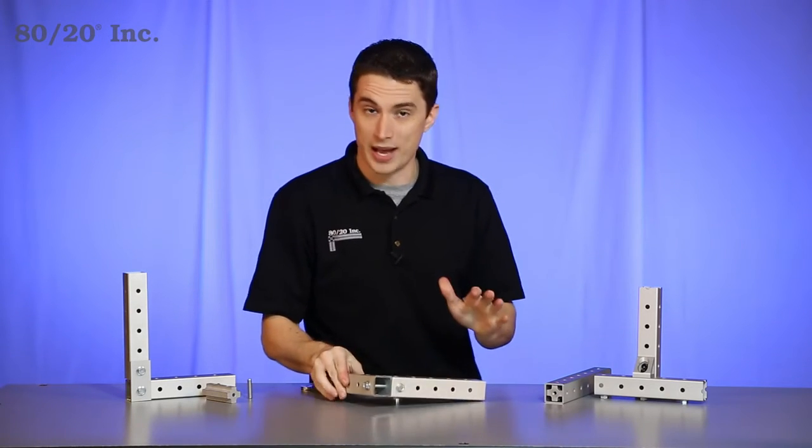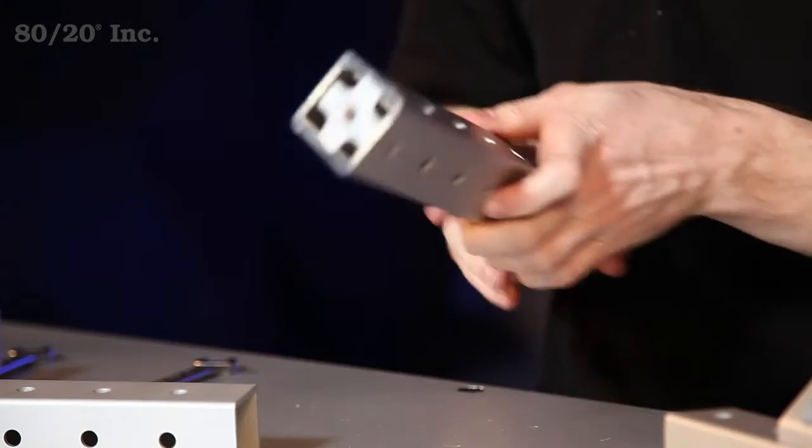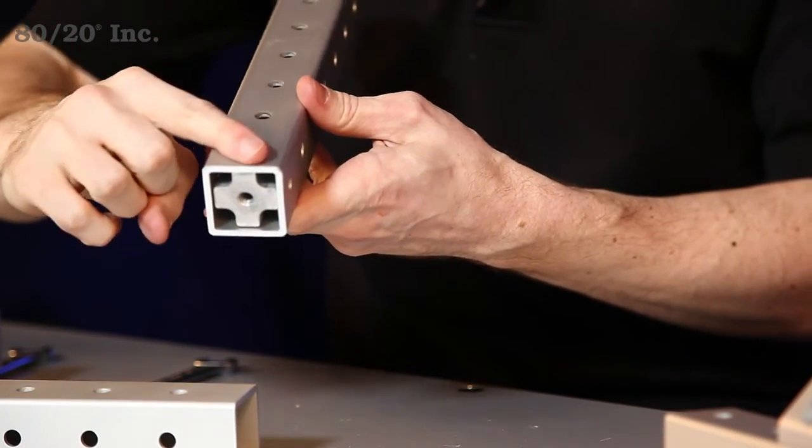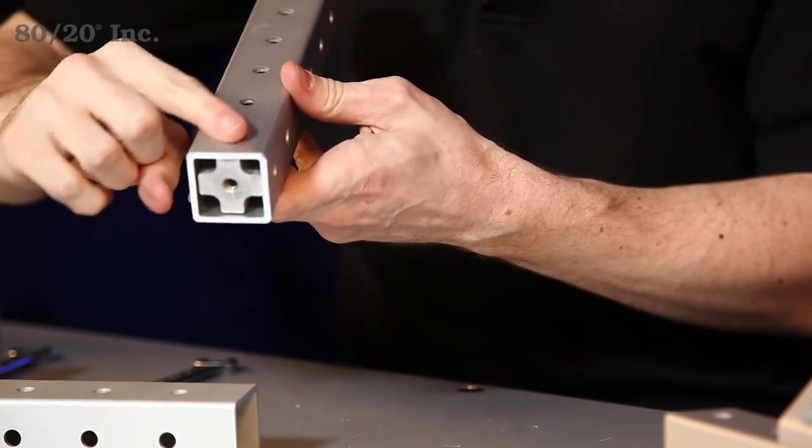Now another option we have is the roll pin. This option gives you a more smooth, clean finish on your project and hides any bolts or hex nuts sticking out.